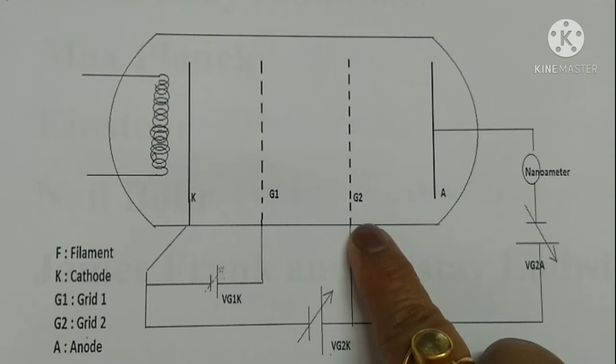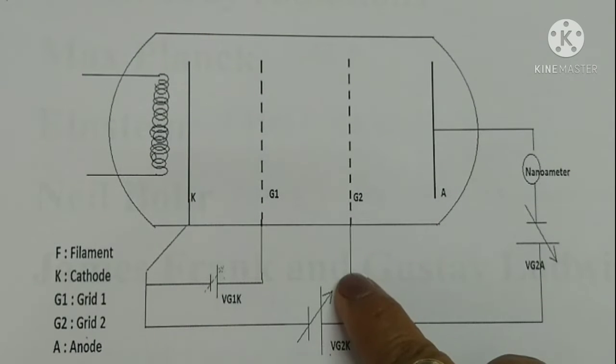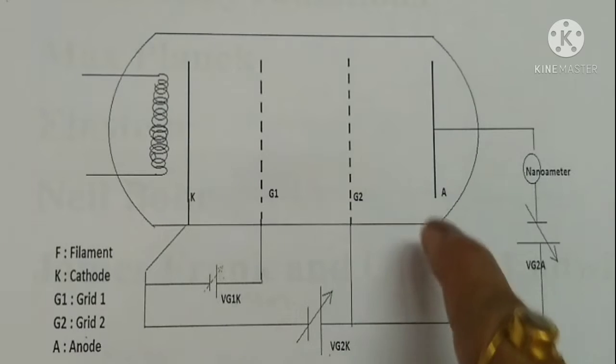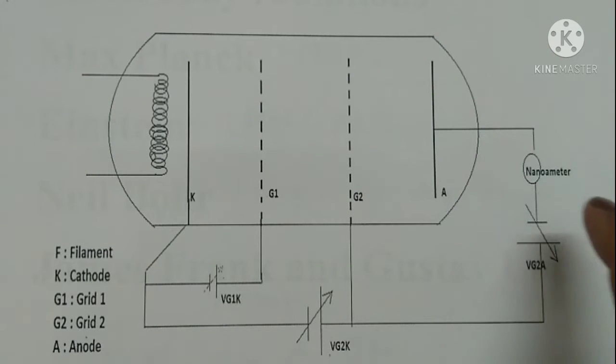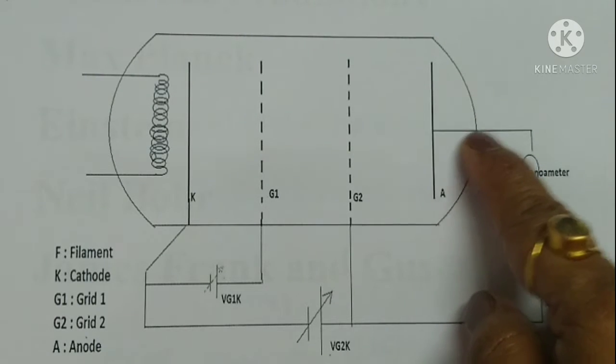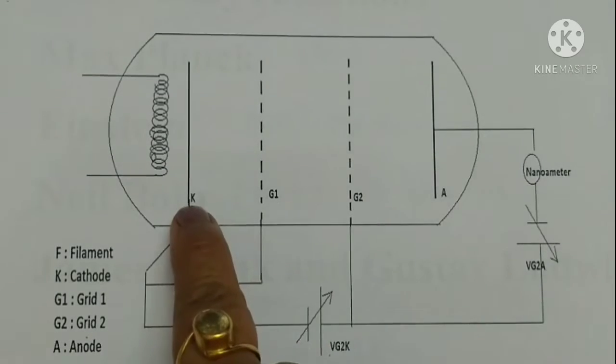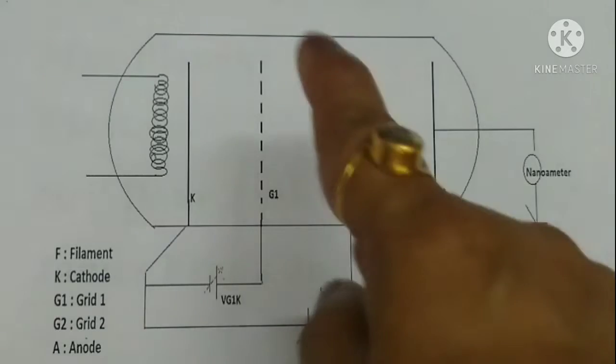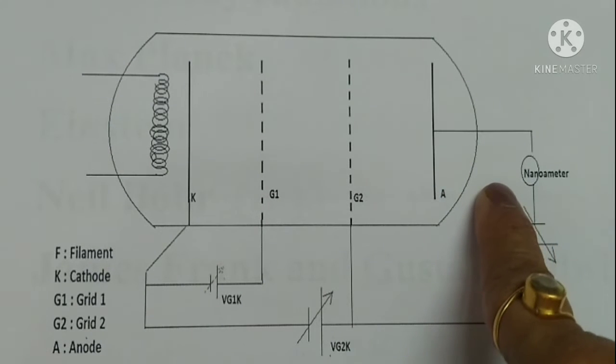Accelerating potential is applied by introducing another grid G2, which is kept positive relative to cathode and anode plates. G2 acts as a filter for higher energy electrons to pass through it. Electrons with sufficient kinetic energy can reach the anode and contribute to the plate current, which can be read by the ammeter. Plates K, G1, G2, and A are in parallel plate configuration and produce uniform electric field.